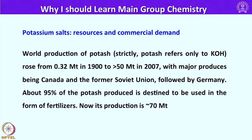Let us look into potassium salts, their resources and commercial demand. World production of potash or potassium hydroxide rose from 0.32 metric tons in 1900 to around 50 metric tons in 2007, with major producers being Canada and the former Soviet Union, followed by Germany. About 90 percent of potash produced worldwide is used in fertilizer manufacturing. Now the potash production is around 70 metric tons, showing the importance of potassium salts.